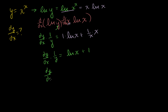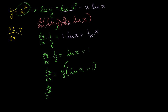So we have dy/dx times 1 over y equals natural log of x plus 1. Multiplying both sides by y, we get dy/dx equals y times the natural log of x plus 1. Substituting y = x^x back in, the derivative of y with respect to x is x^x times the natural log of x plus 1. This is often given as a trick or bonus problem.